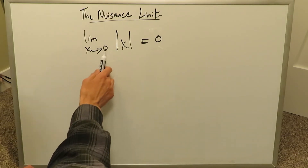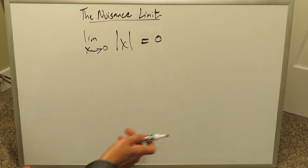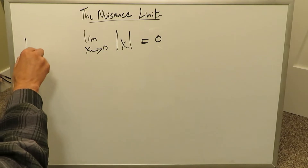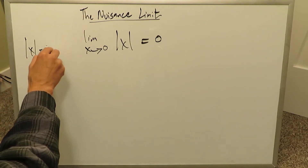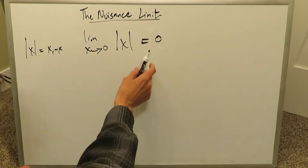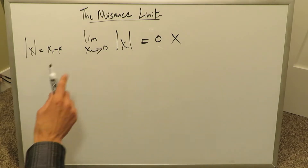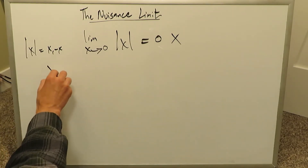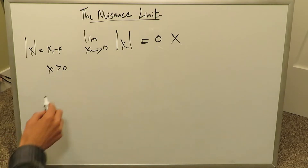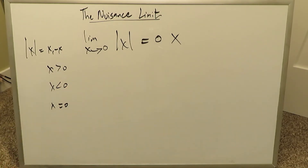To say the limit as x approaches 0 of absolute value of x is equal to 0 is wrong on a number of levels. You know absolute value of x is equal to x and minus x. Keeping that in mind, let's explain why this is incorrect. You have to examine this from three different areas: for values larger than 0, for values less than 0, and for values equal to 0. We will do it in this order from top down.